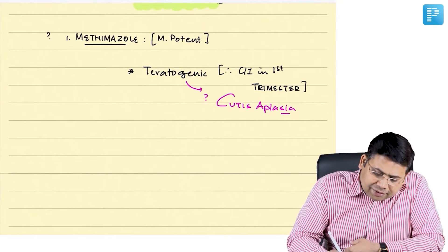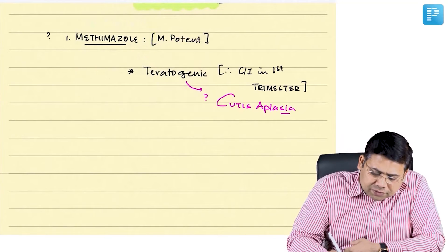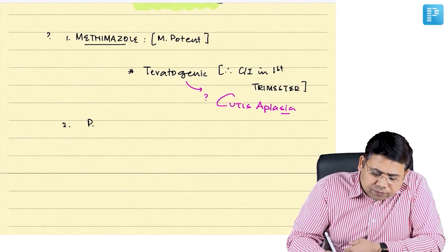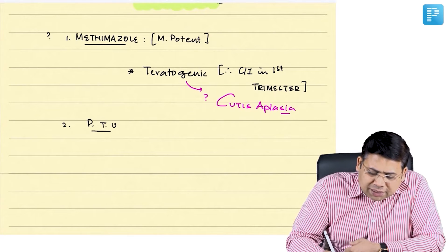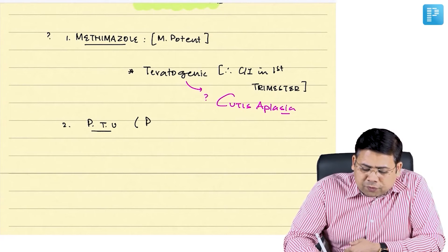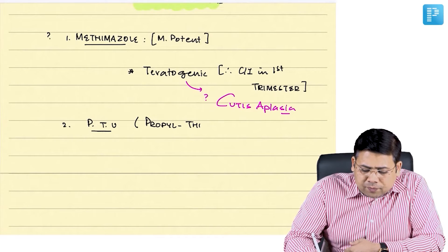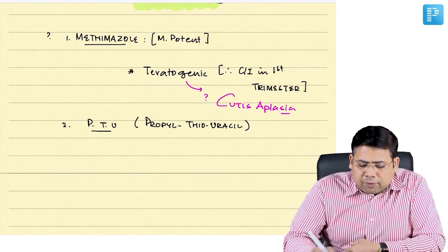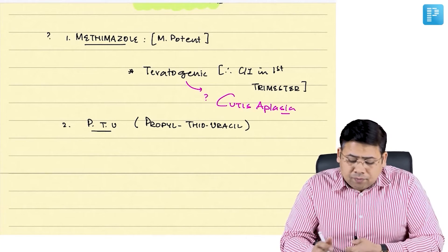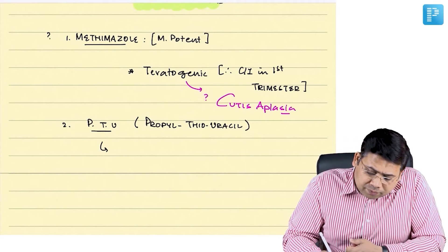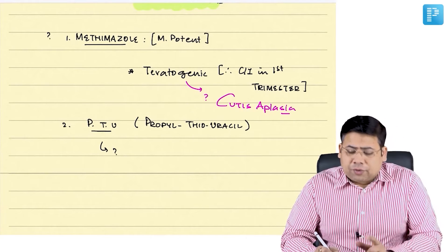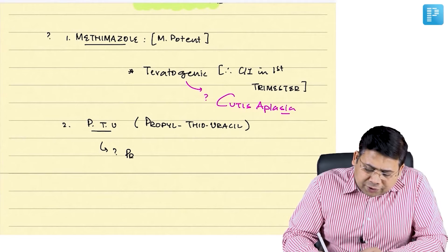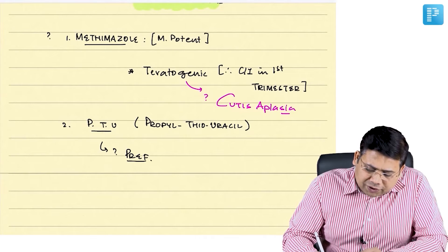The second category drug that we have is PTU. PTU stands for Propylthiouracil. What is important point about this PTU is that Propylthiouracil is preferred during the first trimester, is preferred during pregnancy.